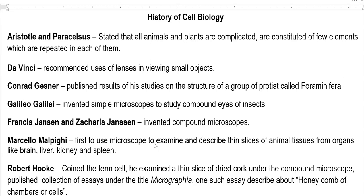The first one is Aristotle and Parsilius. They are the scientists who stated that all animals and plants are complicated in structure and they are constituted of few elements which are repeated in each of them. So that is the finding, or an assumption, of Aristotle and Parsilius.